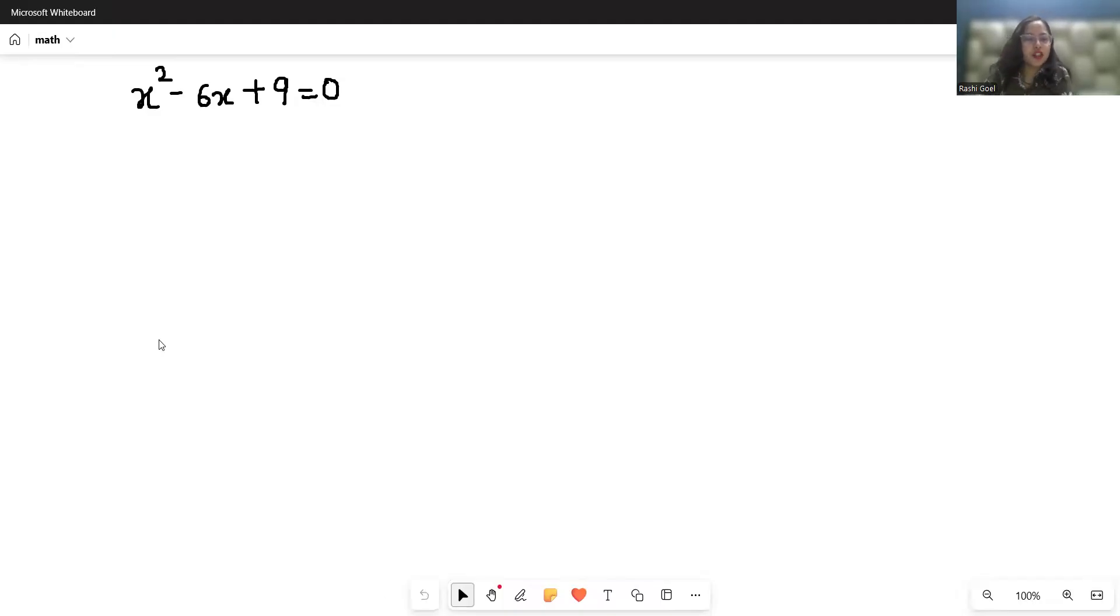Hello everyone, welcome to my channel. We are going to solve this quadratic equation: x² - 6x + 9 = 0. So let's start with today's video solution. There are multiple methods to solve this type of quadratic equation, so I am going to opt for the factorization method.